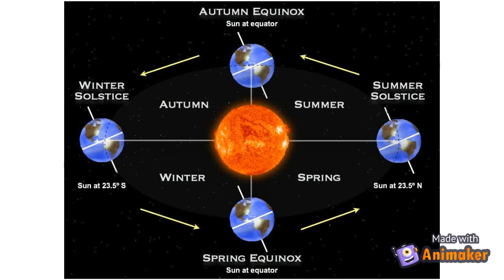When the sun is at its closest distance to the equator, this event is called the equinox. During an equinox, the earth experiences 12 hours of day and 12 hours of night.